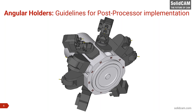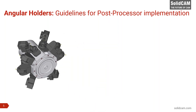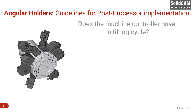What is the first thing you need to know when you want to have an Angular holder attached to your turret or spindle? The first question is: does the machine controller have a tilting cycle? This is extremely important. In today's webinar I will use the twin revolver mill-turn machine — I think this is a very common case where there is a revolver and the customer wants to do angular drilling cycles.